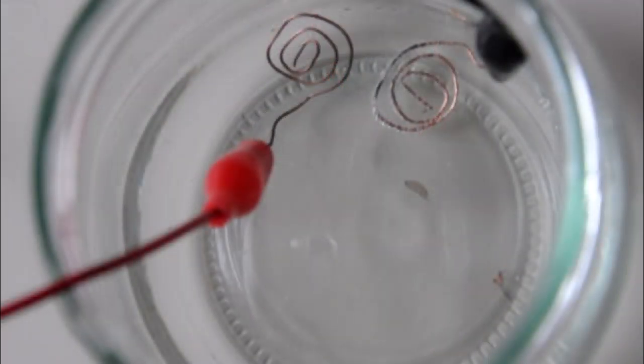As you can see, the copper spiral to the right is bubbling compared with the one to the left. This means that the right copper spiral is the minus pole, which we need to remember for later.